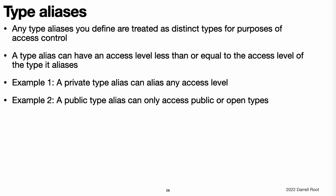Type aliases. Any type aliases you define are treated as distinct types for the purposes of access control. A type alias can have an access level less than or equal to the access level of the type it aliases. For example, a private type alias can alias a private, file private, internal, public, or open type. But a public type alias cannot alias an internal, file private, or private type. Note, this rule also applies to type aliases for associated types used to satisfy protocol conformances.